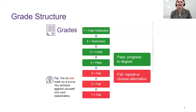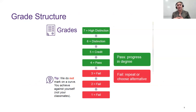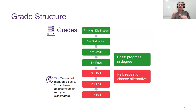At UQ we have a seven-point numerical grade structure. A seven is a high distinction, six is a distinction, five is a credit, and four is a pass. The minimum to pass a course is a four. If you get a three, which is technically a fail, you may be eligible for supplementary assessment — an additional piece of assessment which, if passed, grants you a four. If you get a two or one, supplementary assessment is not available. UQ does not mark on a curve — you are achieving against yourself, not your classmates.